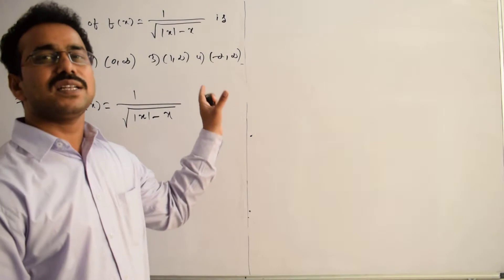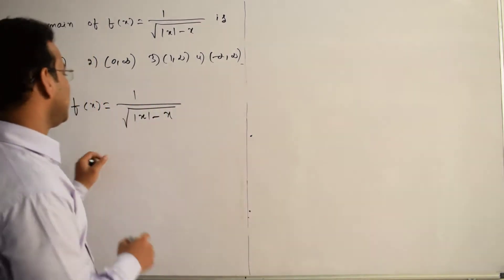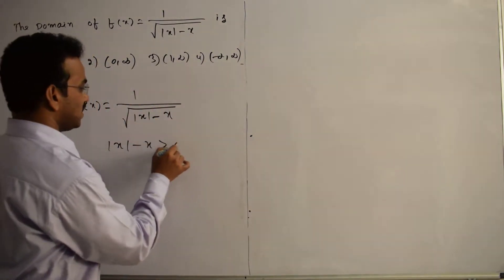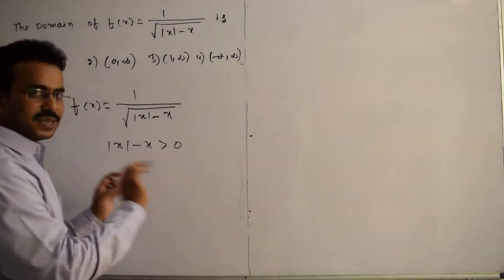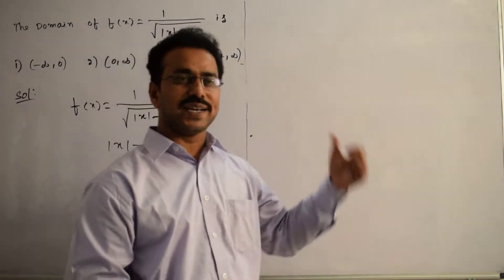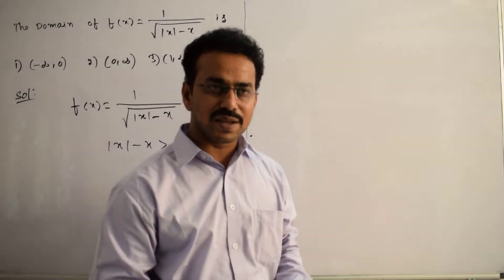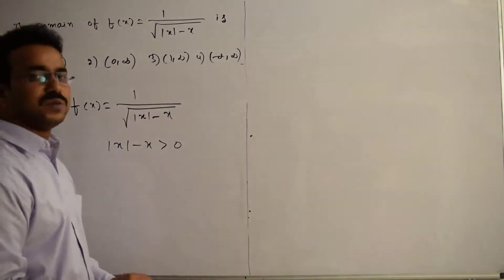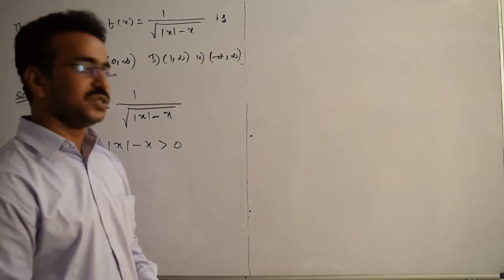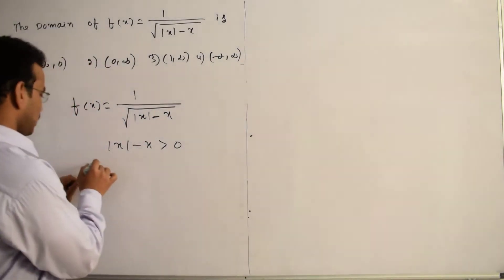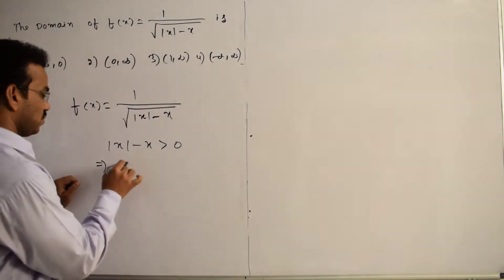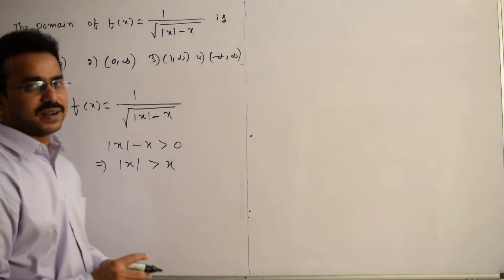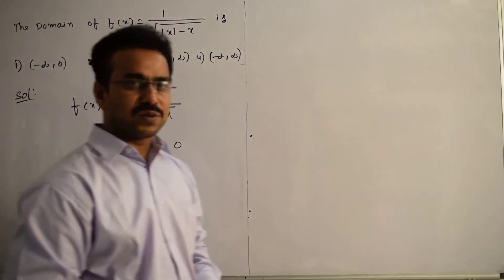The square root term must be greater than 0, so |x| - x must be greater than 0 — not equal to 0. If it equals 0, we cannot define the values of f. So |x| - x > 0, which implies |x| > x. We now have one inequality to analyze.